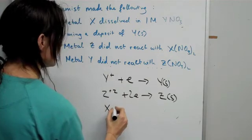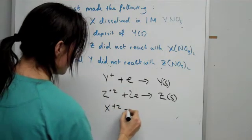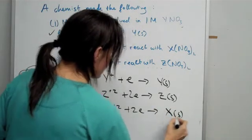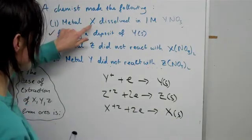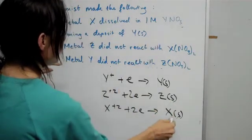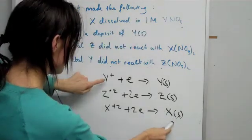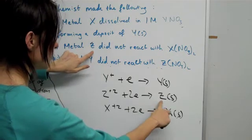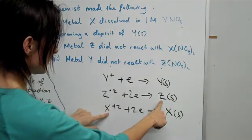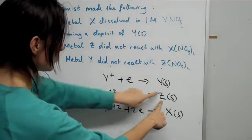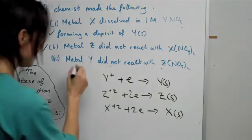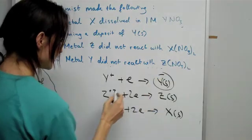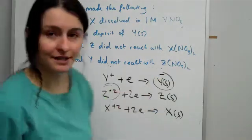You really have to just play around with your equations and come up with something smart. So the final order is: Y⁺ + e⁻ → Y(s), then Z²⁺ + 2e⁻ → Z(s), then X²⁺ + 2e⁻ → X(s). Let's check if that works now. Metal X dissolved in YNO3 - yes it does, so that works. Metal Z did not react with X(NO3)2 - that's a non-spontaneous reaction, so it won't happen. That's true. And finally, metal Y did not react with Z(NO3)2. So it doesn't.